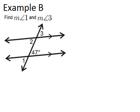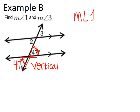Let's go to example B, where it says, find the measure of angle 1 and the measure of angle 3. Now, angle 1 and the 47 degree angle there are vertical angles because they are created by intersecting lines, and they're on opposite sides of those intersecting lines. That means they have to be congruent. So angle 1 has to be 47 degrees. So the measure of angle 1 equals 47 degrees.